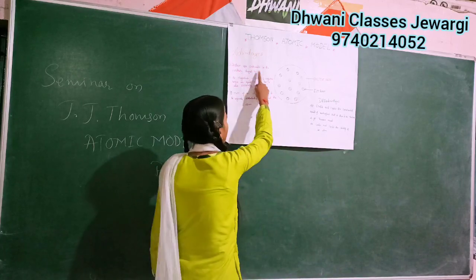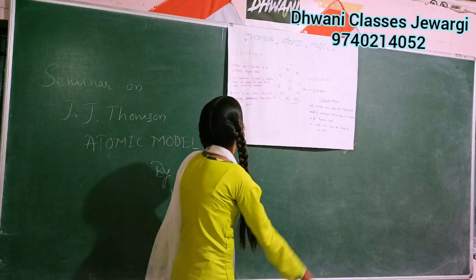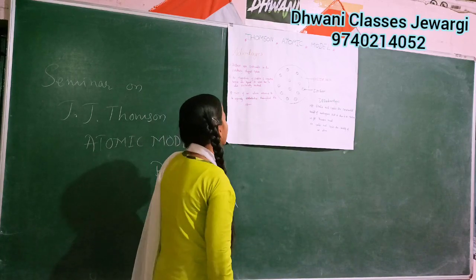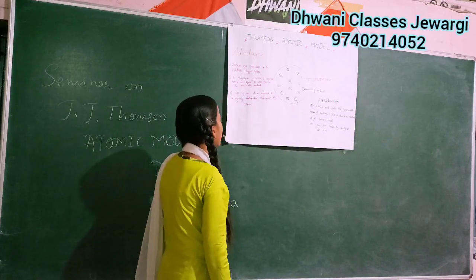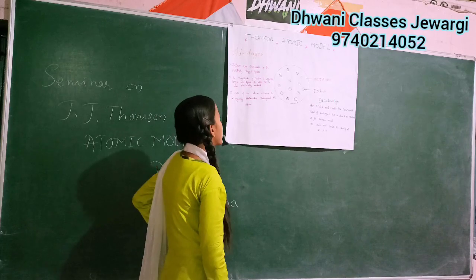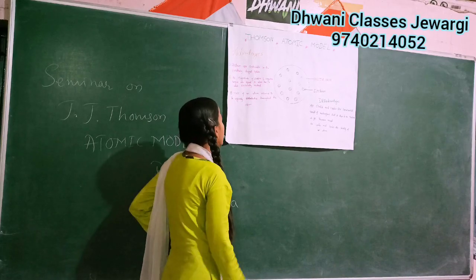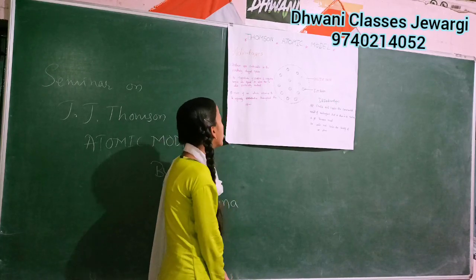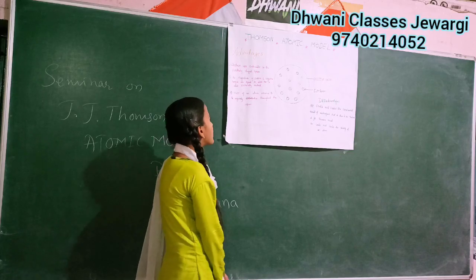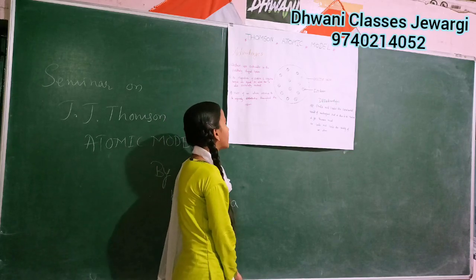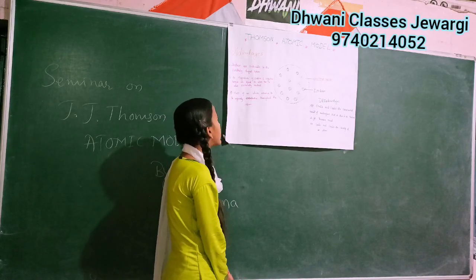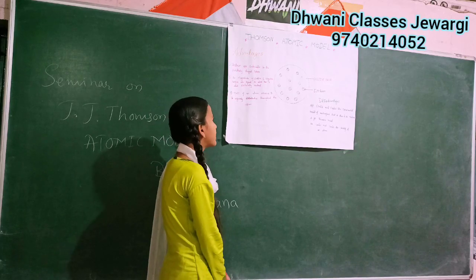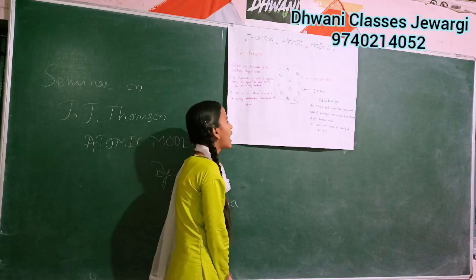The advantage of the Thomson Atomic Model: electrons are embedded in the positively charged sphere. The magnitude of the positive and negative charges are equal, so the atom is electrically neutral. The mass of an atom is assumed to be uniformly distributed throughout the atom.